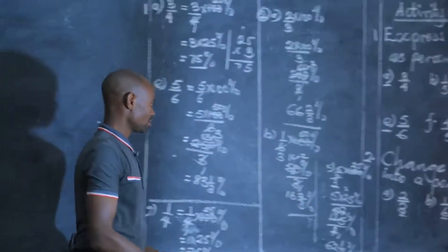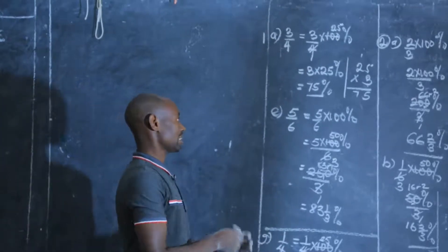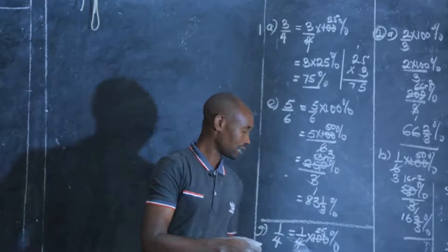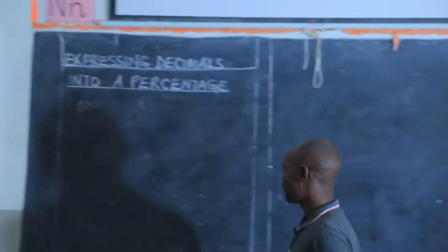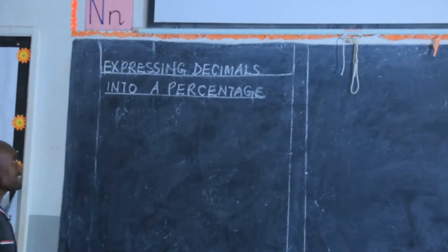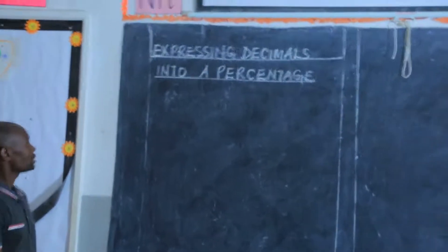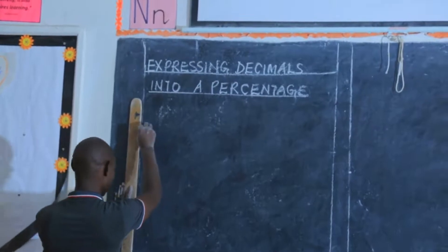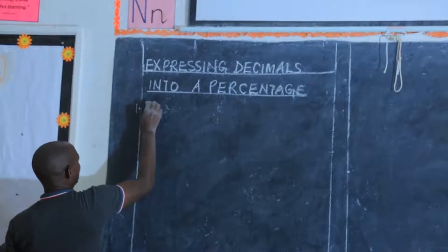Those are the numbers I think were a little bit tricky. You can now check the rest and see whether you got the answers right. In our lesson today we are going to look at how we can express decimals into percentages. Example number one: express a decimal number as a percentage.